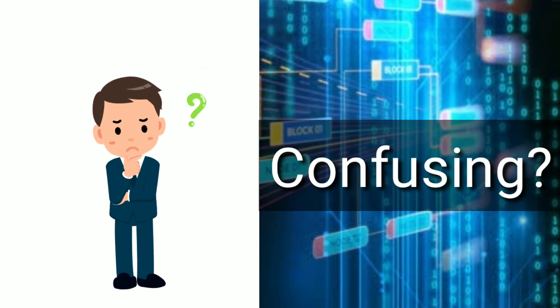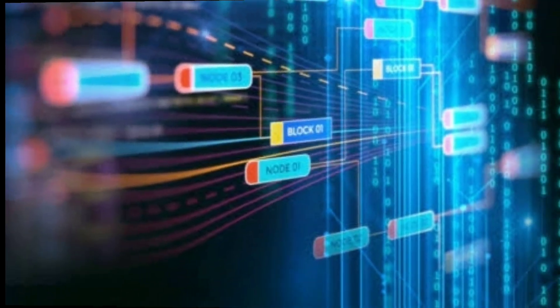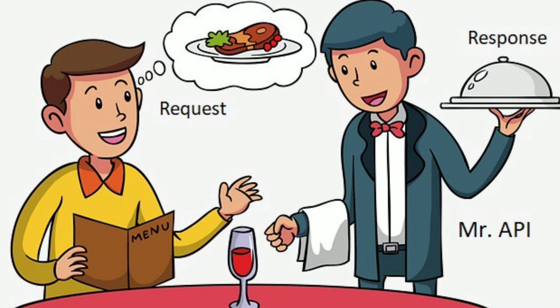Let's try to understand this in a different way. Consider you are about to order food at some restaurant. The waiter who comes to take your order can be related to an API. It is quite obvious that you would place your order request after checking their menu. The waiter, or API here, would accept your order and bring delicious food to your table as a response. So here, you are sending a request, and the API returns the required response after processing.